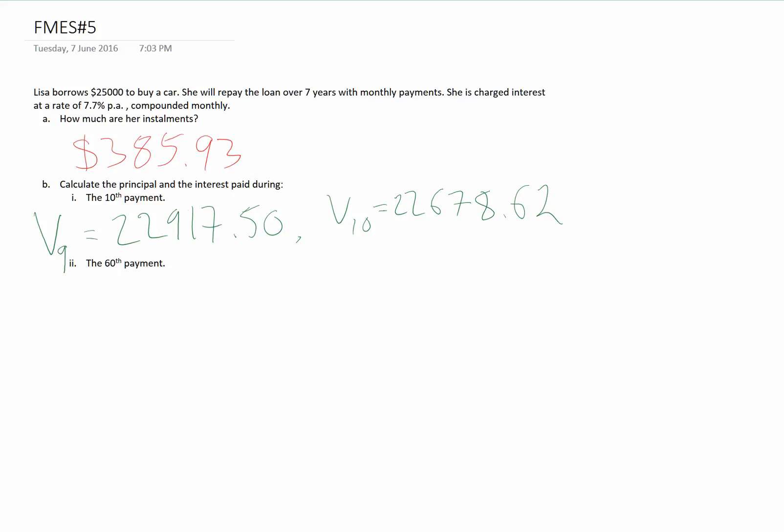That's the amount she owes after each one of these. So the difference will be how much of the principal she's paid off. The principal that she pays off in that 10th payment - well, V9 is bigger, so V9 minus V10. We can use our calculators to figure that out. The amount she pays off is $238.88.